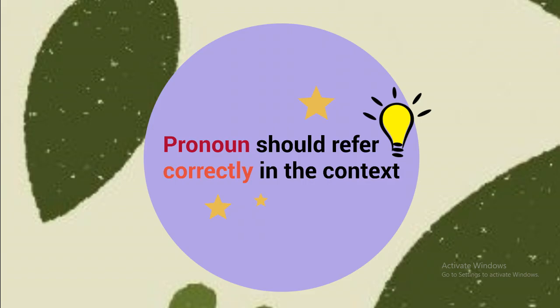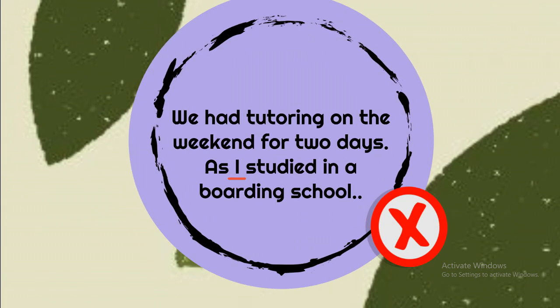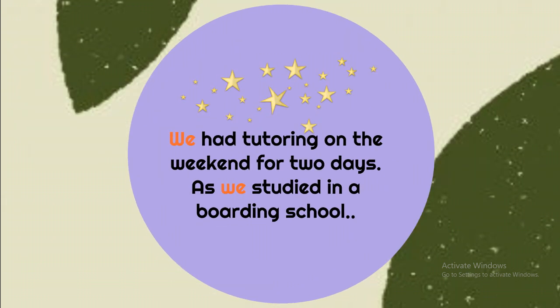Error 6: Pronoun reference. A pronoun should refer correctly in context. Look at these two sentences: 'We had tutoring on the weekend for two days. As I studied in boarding school.' The pronoun reference is faulty here because the first sentence used 'we,' but the second sentence used 'I,' which confuses the reader about the characters. The correct version is: 'We had tutoring on the weekend for two days. As we studied in boarding school.'